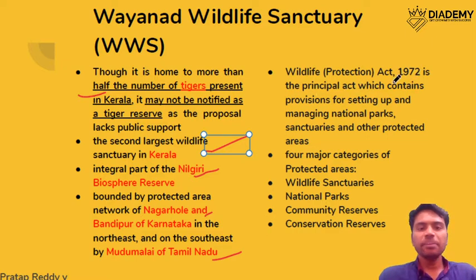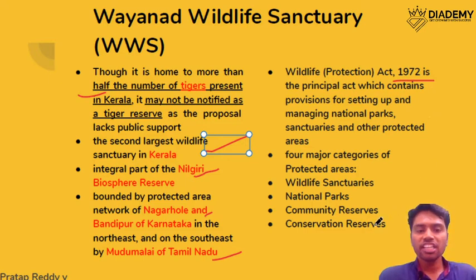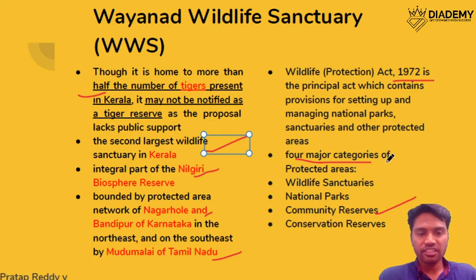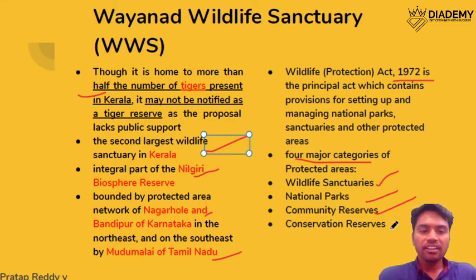Let us look at some basics. There was an amendment to the Wildlife Protection Act 1972 which introduced community reserves. Under the Wildlife Protection Act there are now four major categories of protected areas: wildlife sanctuaries, national parks, community reserves (as seen in Bihar), and conservation reserves.